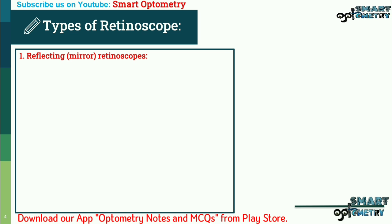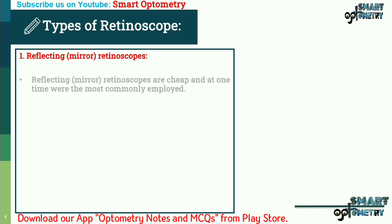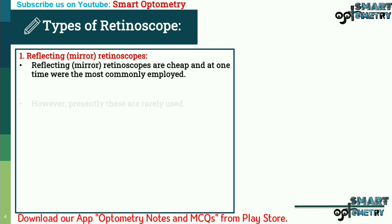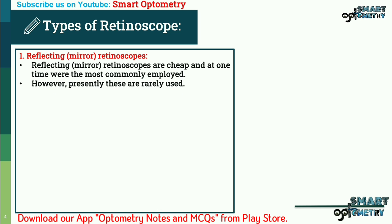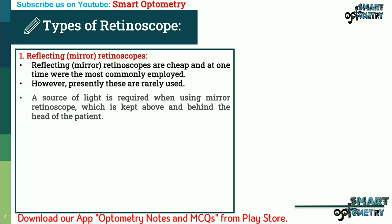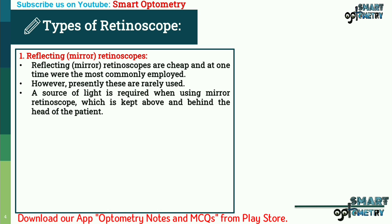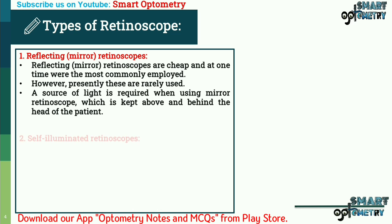There are two types of retinoscope. The first is the reflecting or mirror retinoscope, which is cheap and was at one time the most commonly employed. However, presently it is rarely used. When using a mirror retinoscope, a source of light is required, which is kept above and behind the head of the patient.